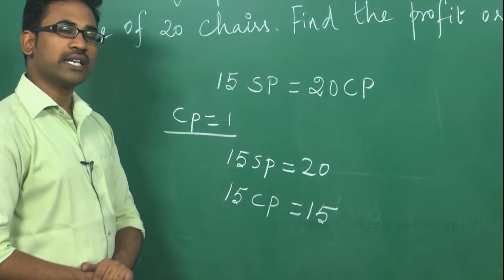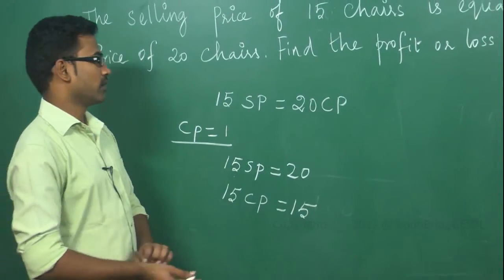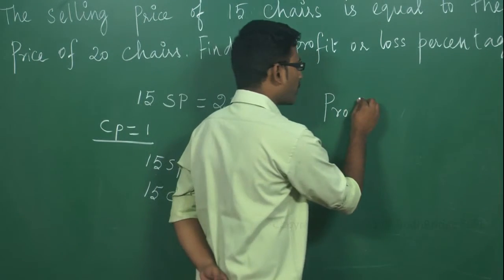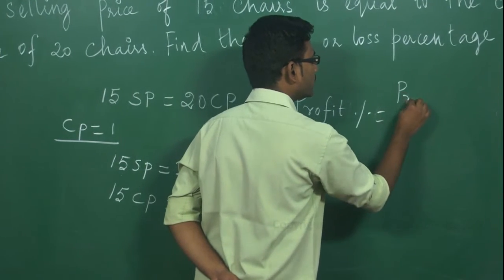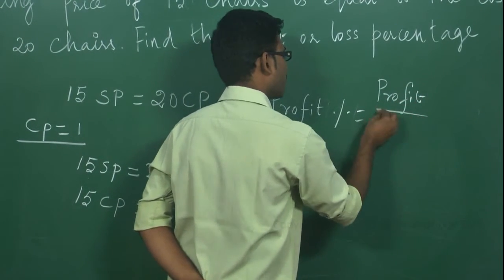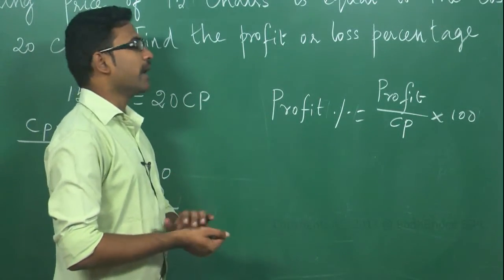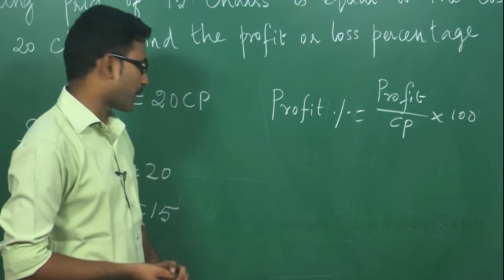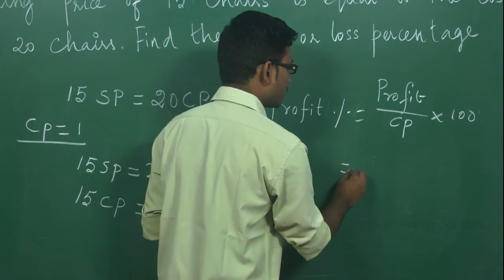Now I have selling price and cost price. Selling price is greater than cost price, so I can conclude the transaction resulted in profit. I need to find profit percentage. The formula is: profit percentage = (profit / CP) × 100. Profit is calculated as selling price minus cost price: 20 minus 15, so profit is 5 rupees.